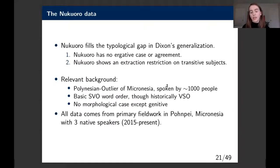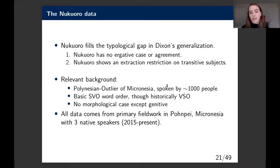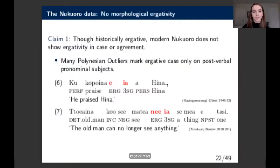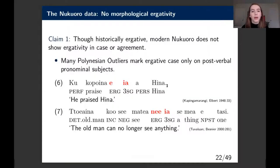Let's look at the data. I'm going to argue two things separately: one, that Nukaworo has no ergative case or agreement; and two, that Nukaworo shows an extraction restriction on transitive subjects. Nukaworo is a Polynesian outlier language of Micronesia spoken by about a thousand people. It has basic SVO word order, though it was historically VSO, and has no morphological case except the genitive. All data comes from primary fieldwork in Pohnpei, Micronesia.